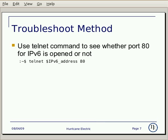Let's go over the troubleshooting method. Use the following telnet command to check whether port 80 for IPv6 is open: simply use telnet with the IPv6 address and port 80.